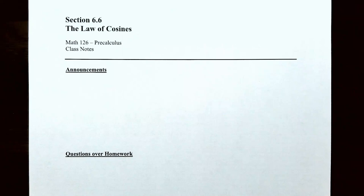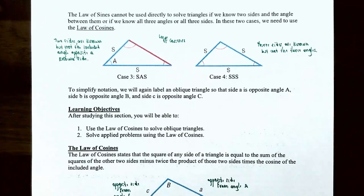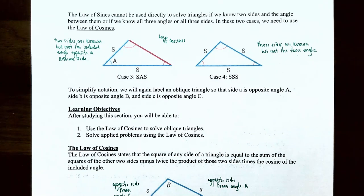Hi everyone, it's Betso Permanent. In this video we're going to talk about the law of cosines. As we saw in the previous video, the law of sines cannot be used directly to solve triangles if we know two sides and the angle between them, or all three sides. In these two cases we're going to use the law of cosines.